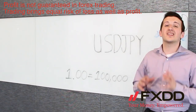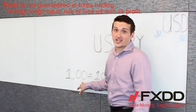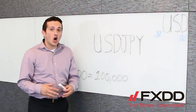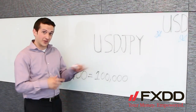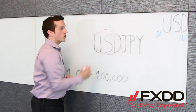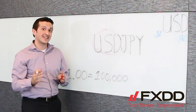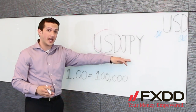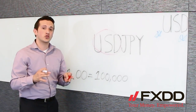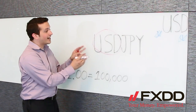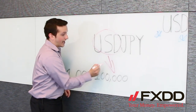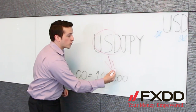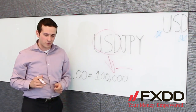Now let's say you want to sell a currency pair for a standard lot. What you'll actually be doing is selling 100,000 units of the base currency, which here is United States dollars, and buying the equivalent in the counter currency, which in this instance is the Japanese yen. You'll be speculating that the value of the United States dollar is going to depreciate against the Japanese yen, so you can then buy back the currency pair at a lower price and make a profit.